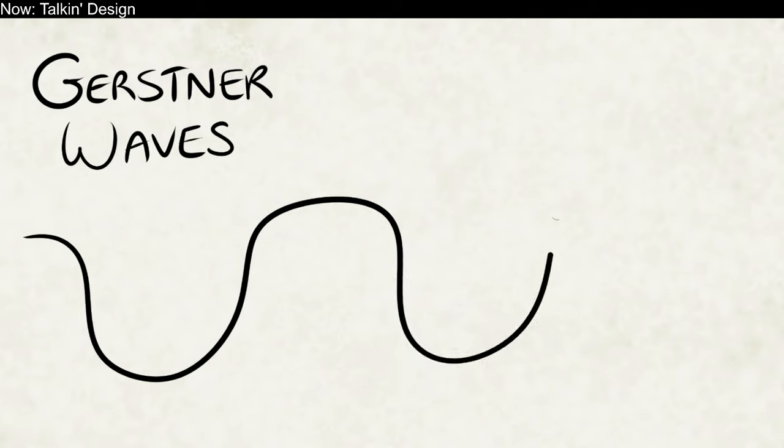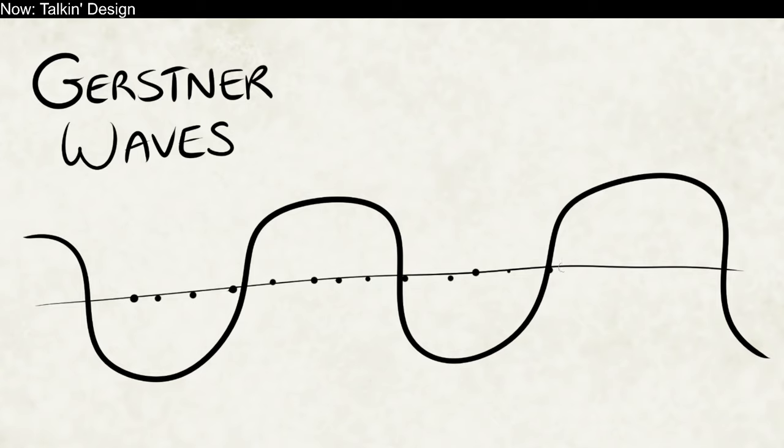Let's start with the grandpappy of Gerstner waves, which is just a sine wave, right? A sine wave is a familiar sight to anybody that's been working in video games. And if you are trying to do an ocean in a video game, you have this big flat plane covered in verts, because it's a mesh, so you've got all these verts making up the mesh.